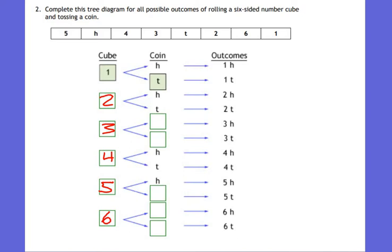If I rolled a number cube and it landed on one and then flipped a coin, what could happen with the coin? Land on heads or tails. If it landed on two, the coin could land on heads or tails. If I rolled a three and then flipped a coin, heads or tails.